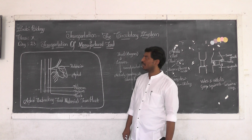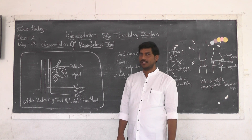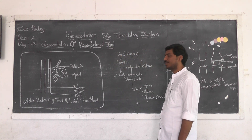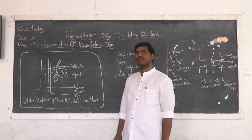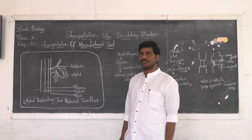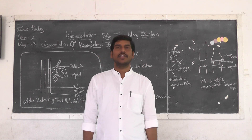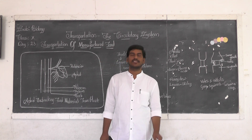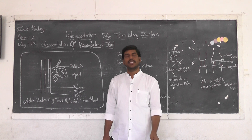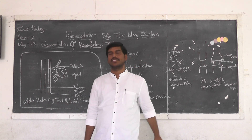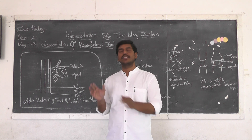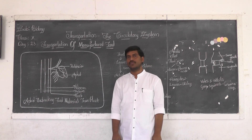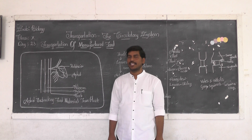Today we are going to learn about transportation of manufactured food. The main aim and objective of today's topic is transportation of manufactured food material — the role of phloem in transportation of manufactured food. In the case of xylem, we study it in the form of transportation. But in the case of phloem, we do not call it transportation — we call it translocation, since the material is moving from one place to another and being stored further.